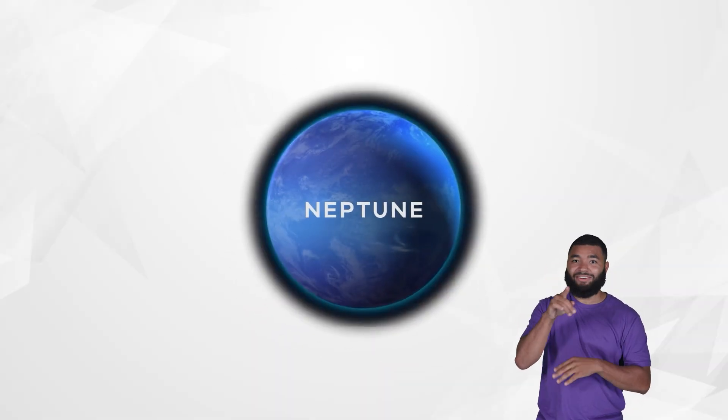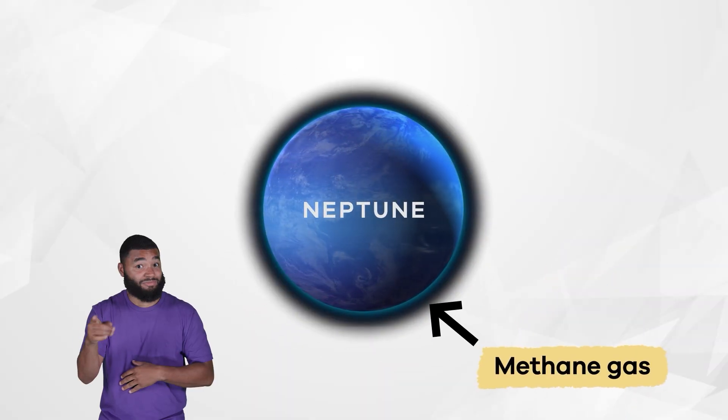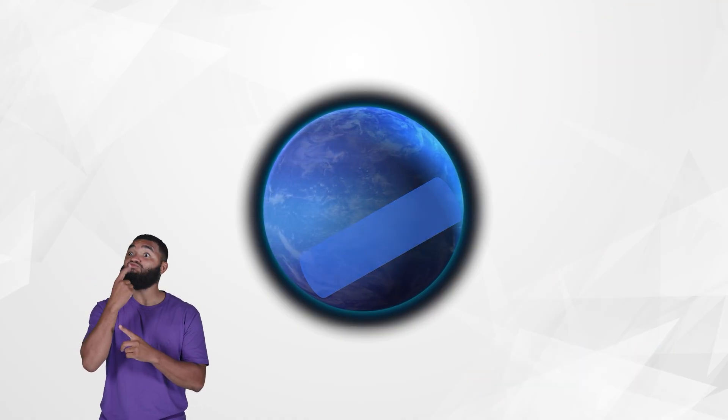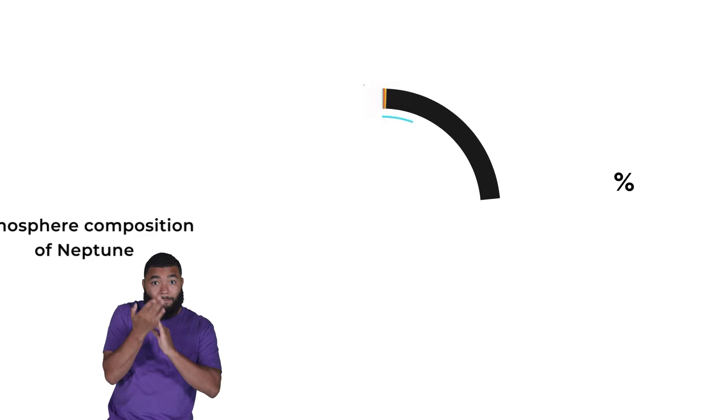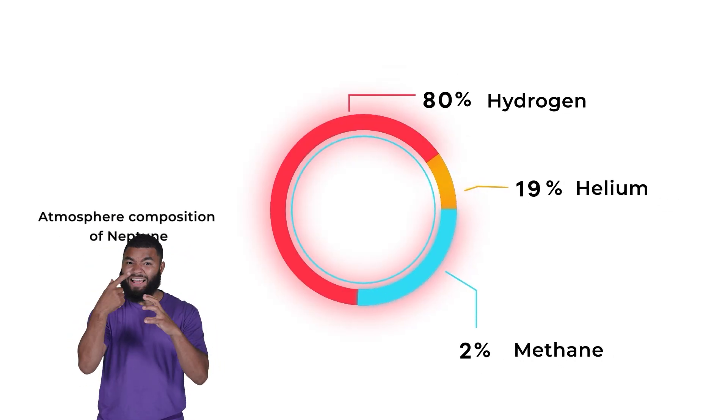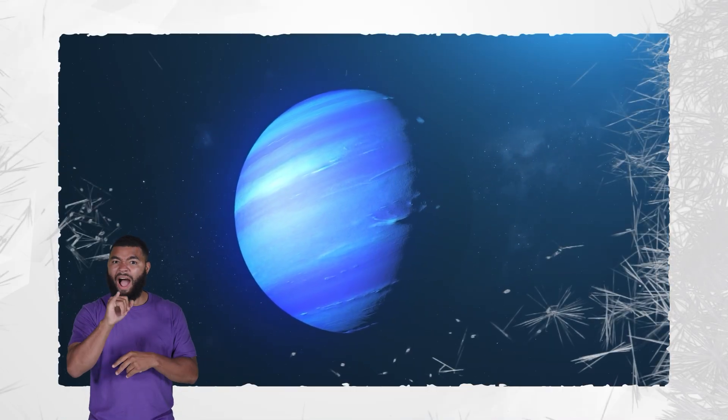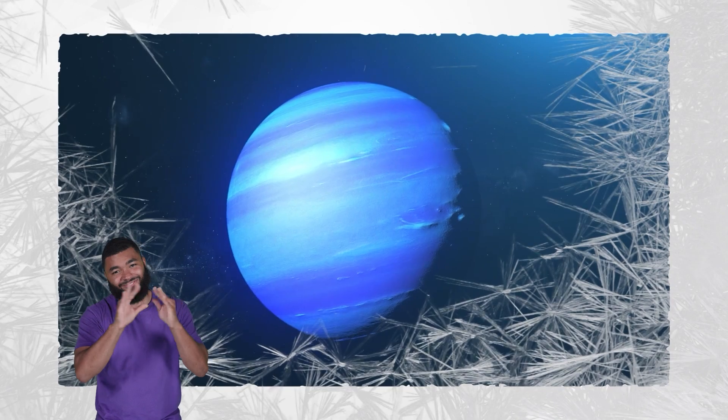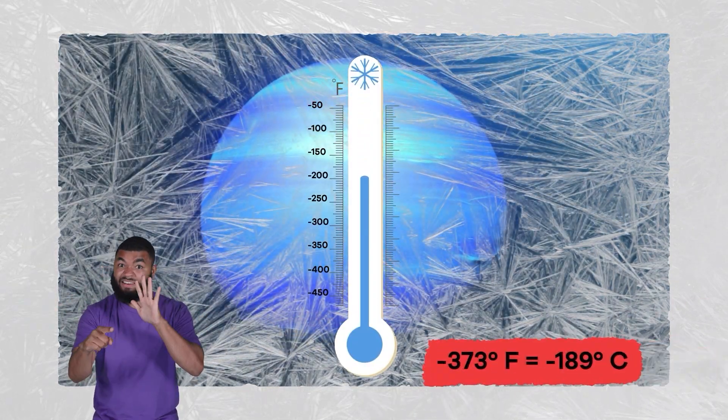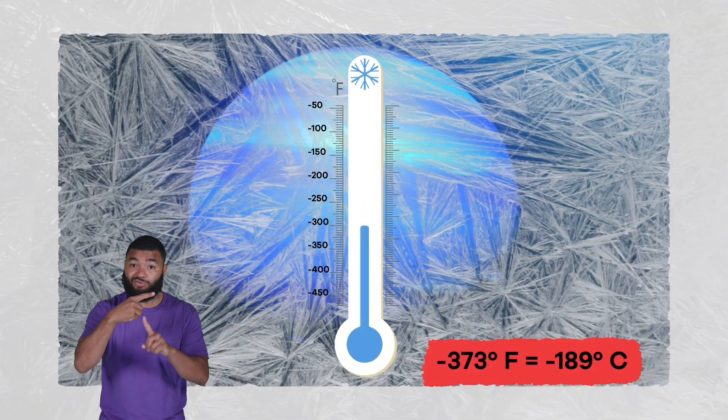Like Uranus, its bright hue comes from the methane gas in its atmosphere, which absorbs red light and reflects blue light. Neptune is a big ball of gas and ice, making it a gas giant. The planet is sometimes referred to as an ice giant, for obvious reasons. It is a frigid planet with temperatures sinking as low as negative 373 degrees Fahrenheit.